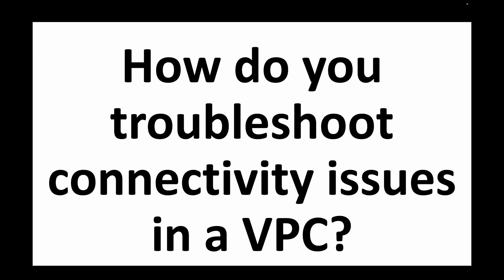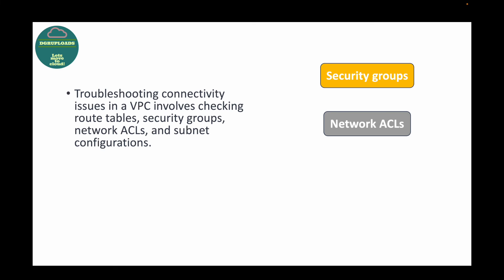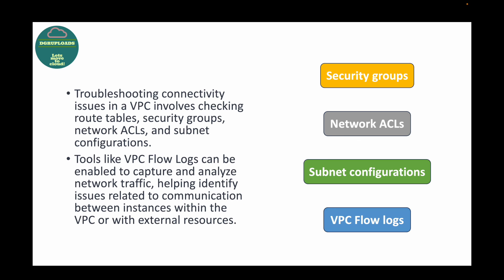The last question is: how do you troubleshoot connectivity issues in a VPC? You can check your security groups, NACLs, subnet configurations, and route tables. You need to validate that you're allowing the right traffic and port numbers in your security groups and NACLs, check if your subnet is configured as public or private, and verify that your route tables are routing traffic properly to the right subnets.